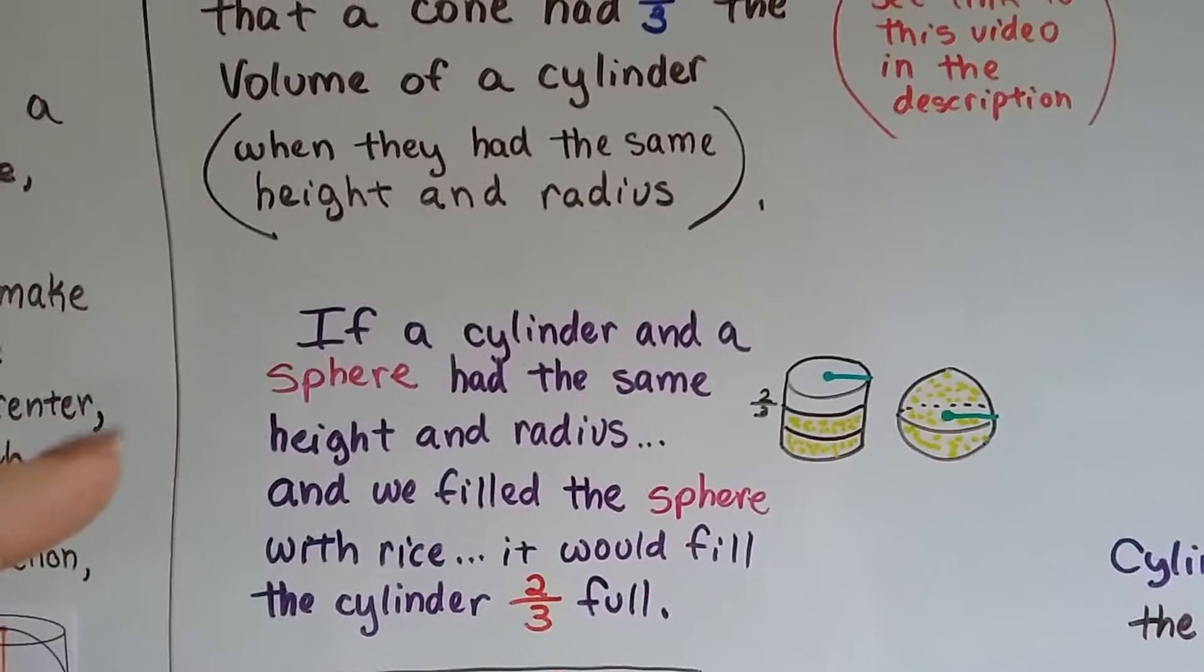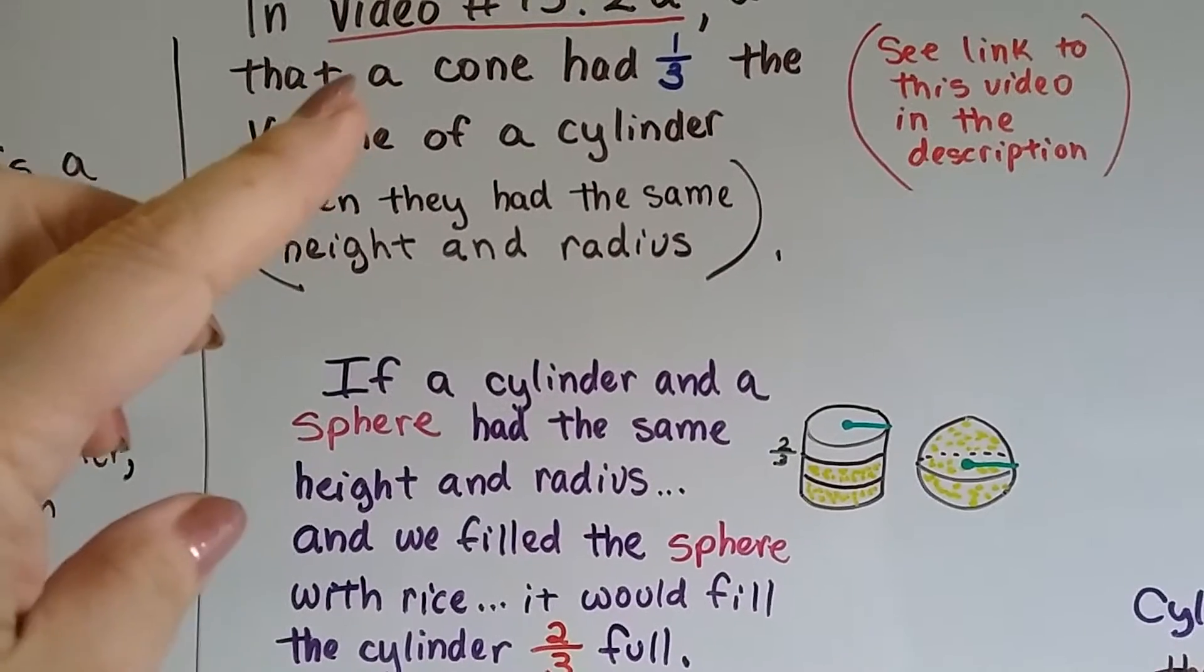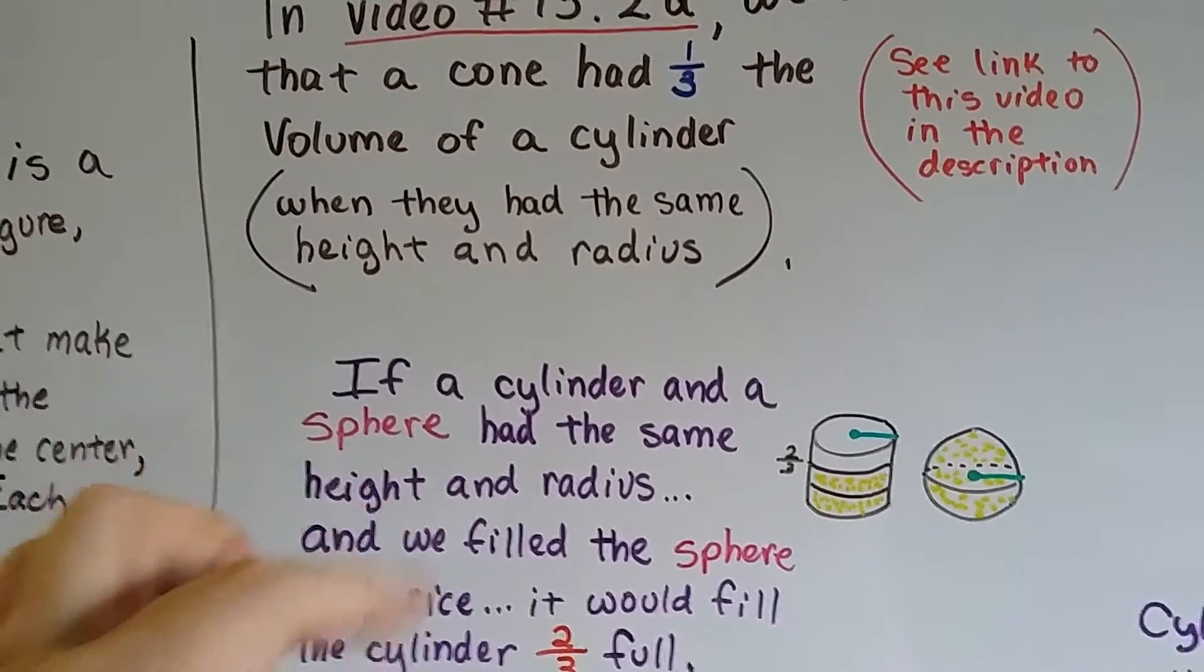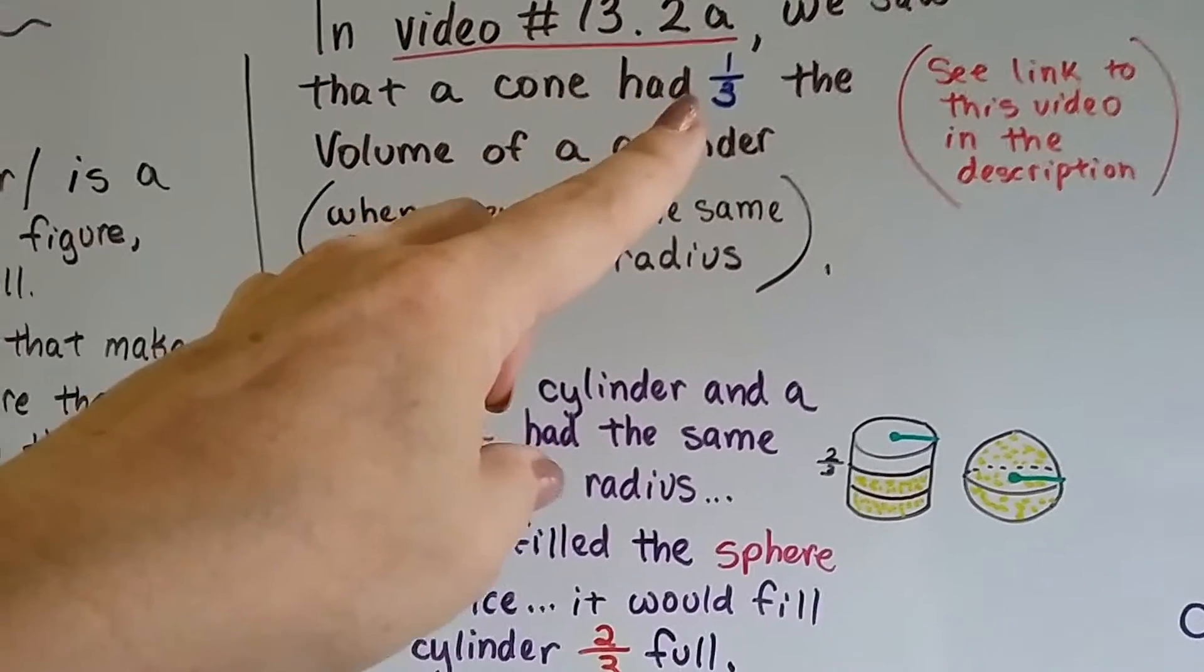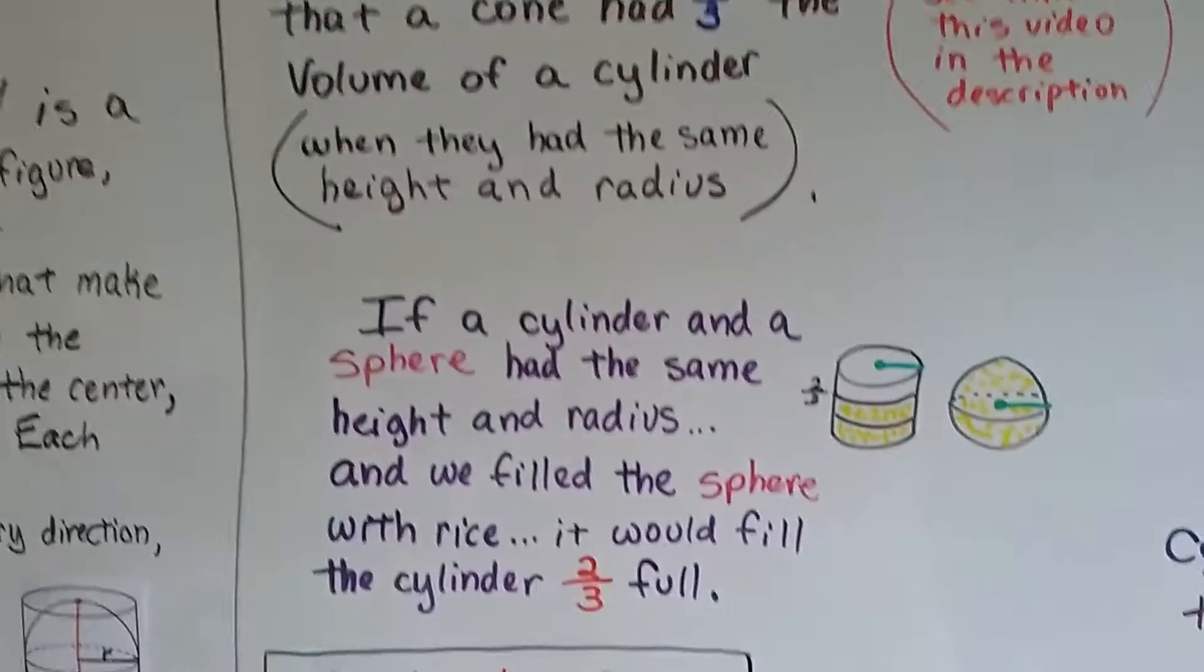So, what we did was we had a cone and we filled it with rice and we poured it into the cylinder and we found, because they had the same height and radius, that the cone had one-third the volume of the cylinder.